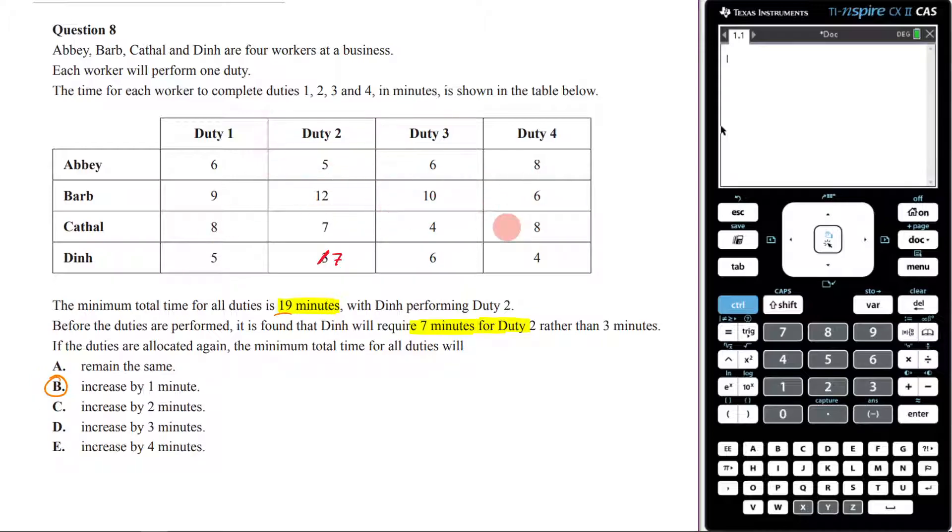But if you've got time, you might as well do the Hungarian algorithm. So let's do the Hungarian algorithm. Remember that your first step is your row reduction. You find the smallest number, which is 5, and then you reduce everything by 5.